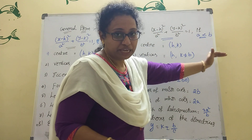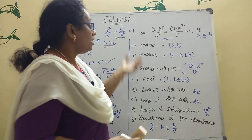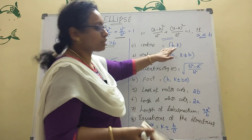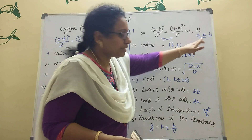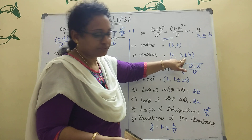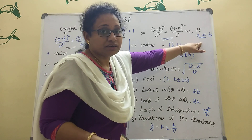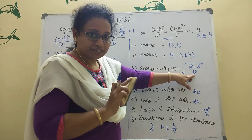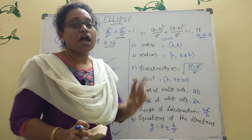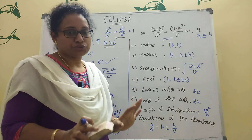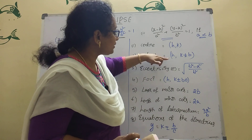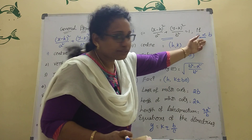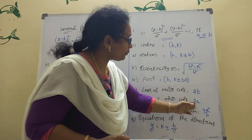Now the second case: if a is less than b. Then we compare using b instead of a. The center is still (h, k). For vertices, we now use b. The length of the major axis is 2b when a is less than b.